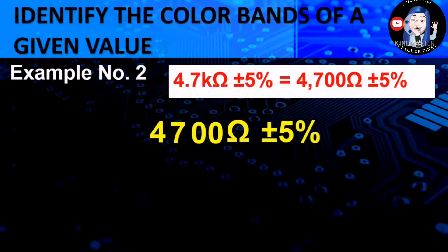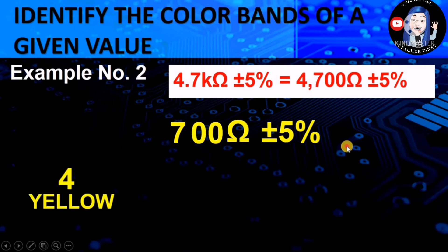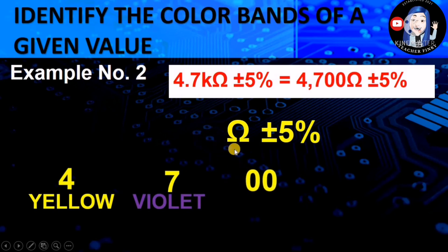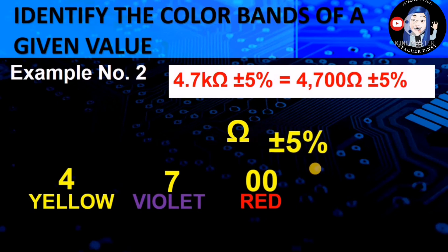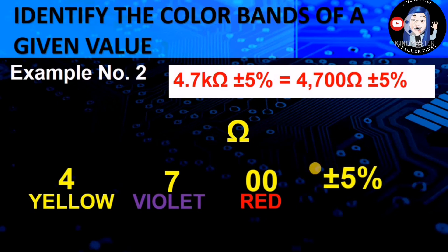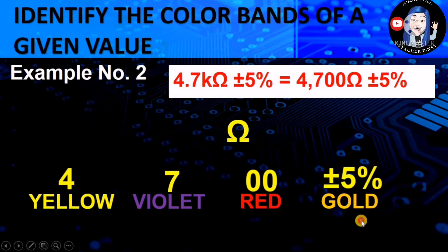Another example: what if the value to look for is 4.7 kilohms plus/minus 5%? Expanding that gives 4,700 ohms plus/minus 5%. The first two digits are 47 — 4 for yellow, 7 for violet. There are two zeros, which means the multiplier color is red, because red has a value of 100. For plus/minus 5%, the color is gold. So for 4,700 ohms plus/minus 5%, the color combination is yellow, violet, red, and gold.